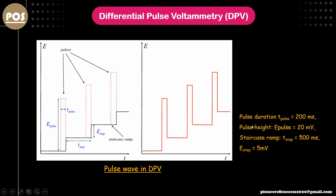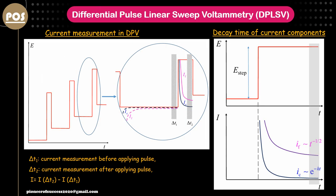The pulse height is in the range of a few millivolts — say 20 millivolts. The staircase ramp T-step is 500 milliseconds. In both measurements at delta T1 and delta T2, the capacitive currents are null and void, and we actually have only the contribution of the Faradaic current.